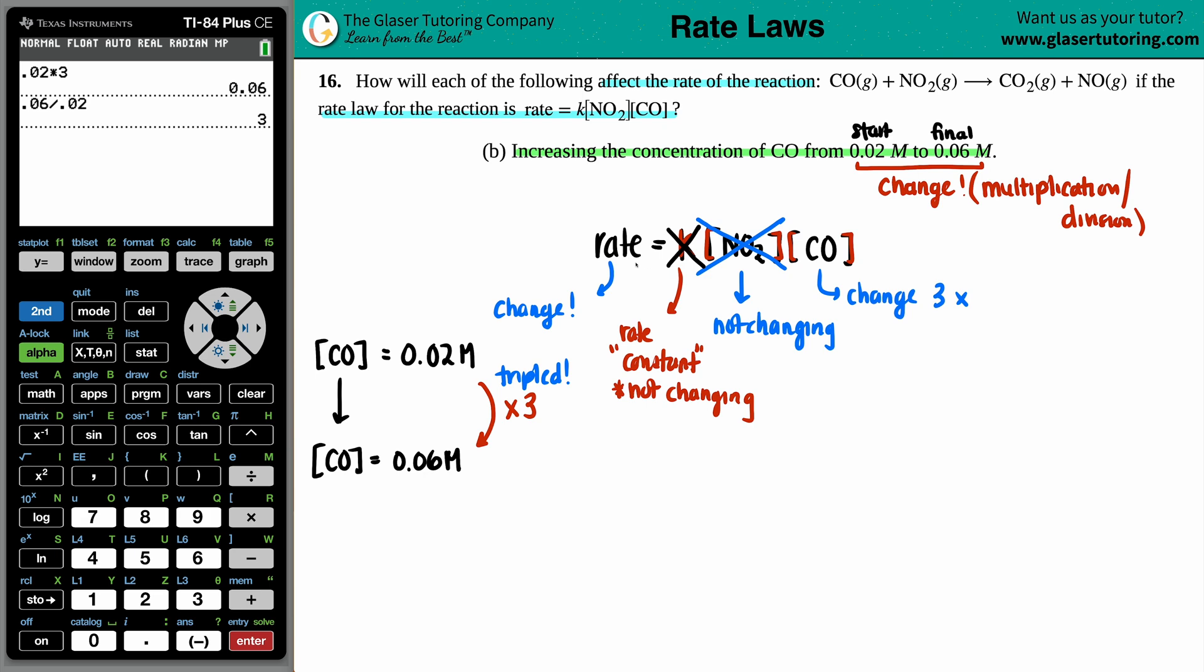And now we just have a very simple equation where the change in the rate is only reliant on that change in the concentration of CO. And we said that we know that the CO is increasing by three times. So let's just plug that in. Rate equals three. Generally, there is an order that goes with every reactant. But if you don't see a number in the upper right hand corner, that just means that it's first order. So technically this would be three to the first. And then my rate would equal three.